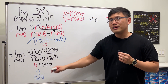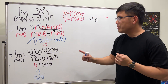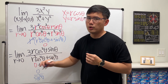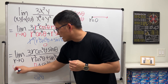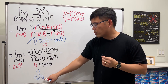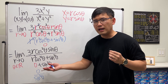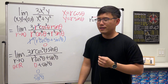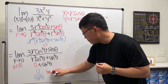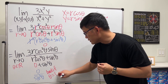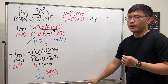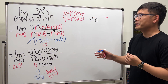We must be careful: as r → 0, θ can be anything. If θ = 0, π, or 2π, then sin²θ = 0, making the denominator zero and giving us 0/0 — which is bad. So we actually cannot draw any conclusion from the polar approach here, and we need to use a different method.